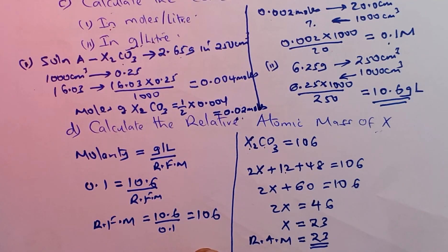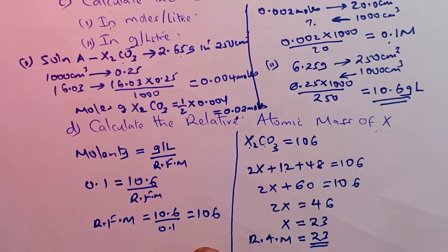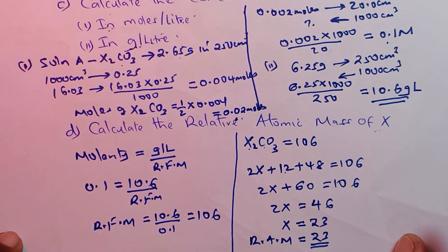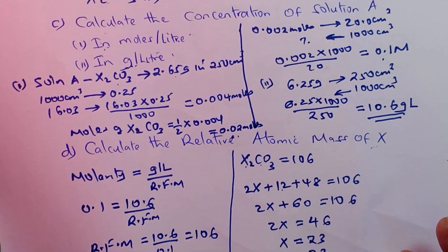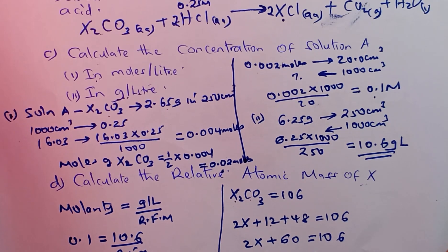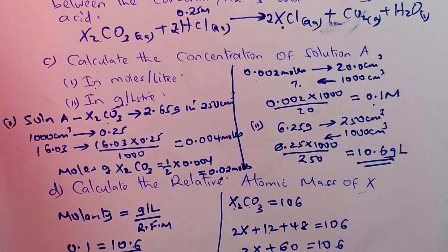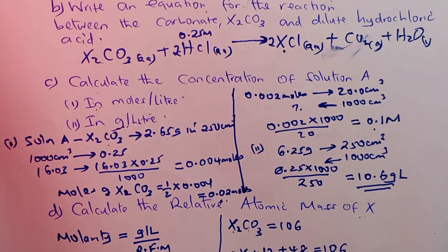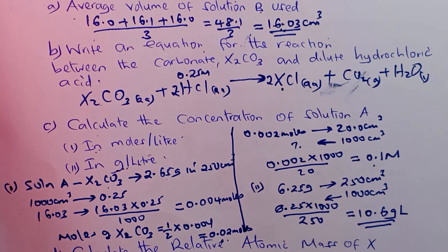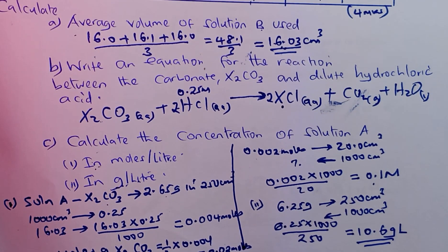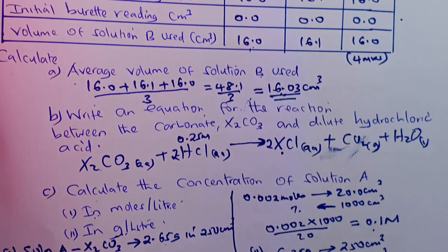If you are asked the identity of this particular element, it is sodium, because sodium has a relative atomic mass of 23. Thank you for watching. If you are watching this channel for the first time, please take a second and click the subscribe button so that you will receive a notification anytime we produce a video like this.